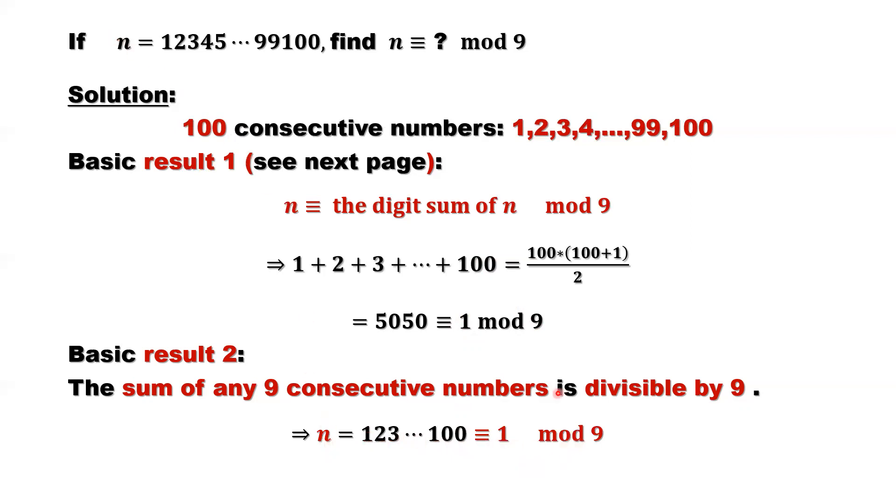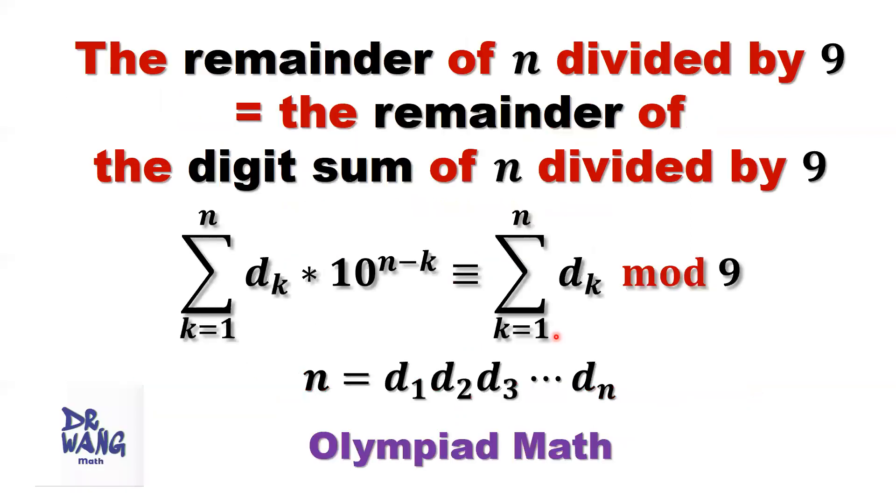So n divided by 9, the remainder is 1. This is the result of my YouTube video to discuss the remainder of n divided by 9 is the same remainder of the digital sum of n divided by 9.